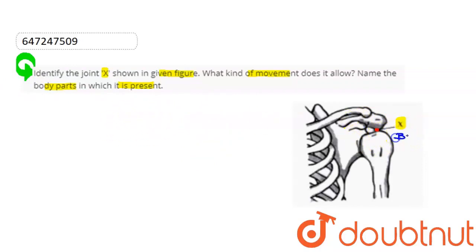If we talk about X, it is basically the ball and socket joint. And these joints allow movement in all directions.